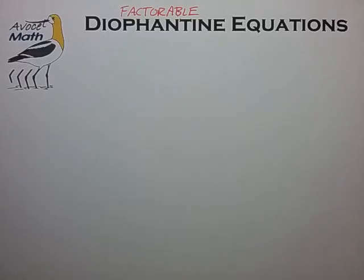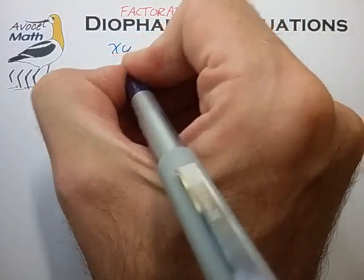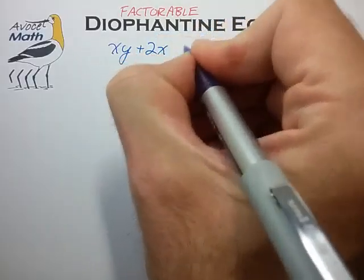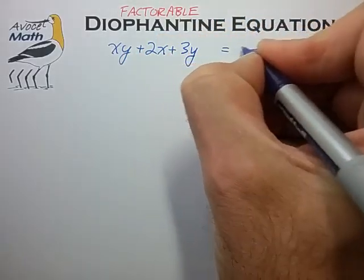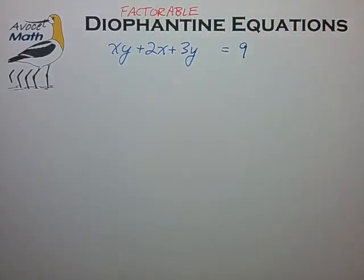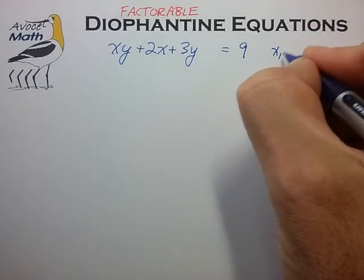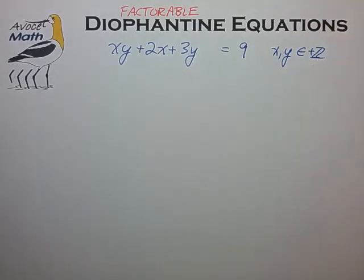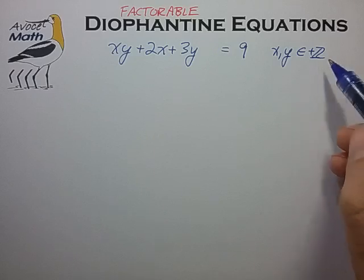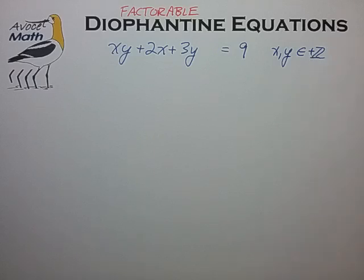Hi, welcome to Avocet Math and our continuing discussion on integer equations of the type I refer to as factorable. The example equation we left off with last time was an equation of the form xy plus 2x plus 3y is equal to 9. In this case we're trying to solve for x and y in the elements of positive integers, which we denote with this script z with the plus sign in front of it.